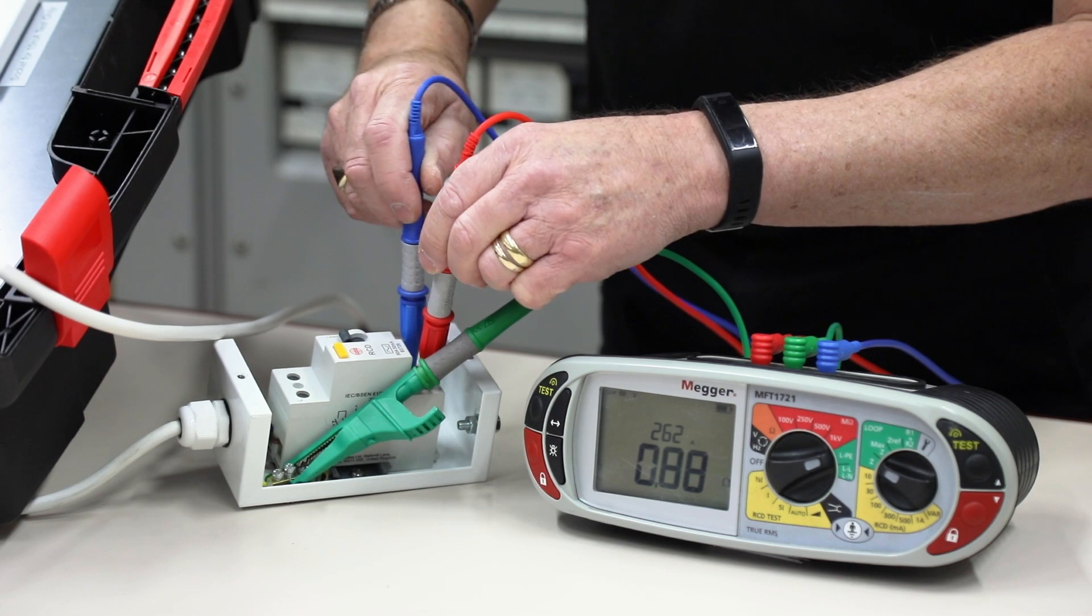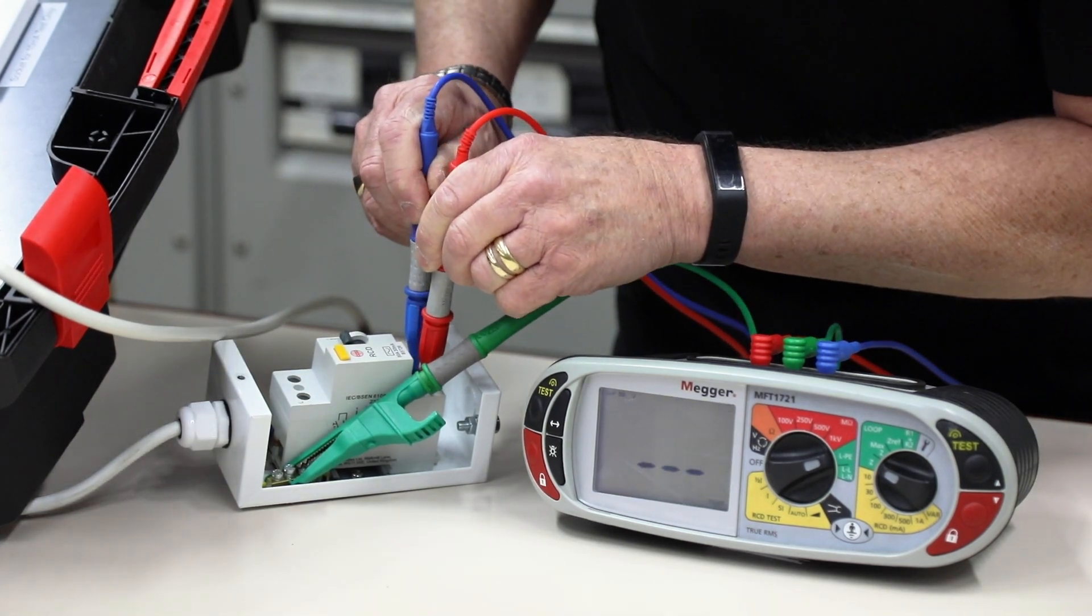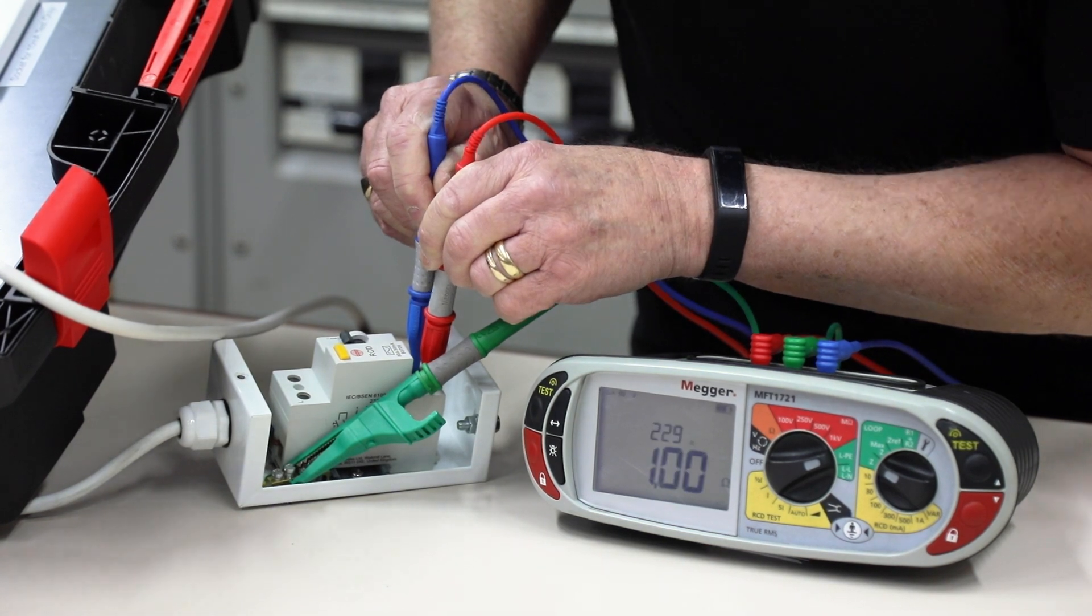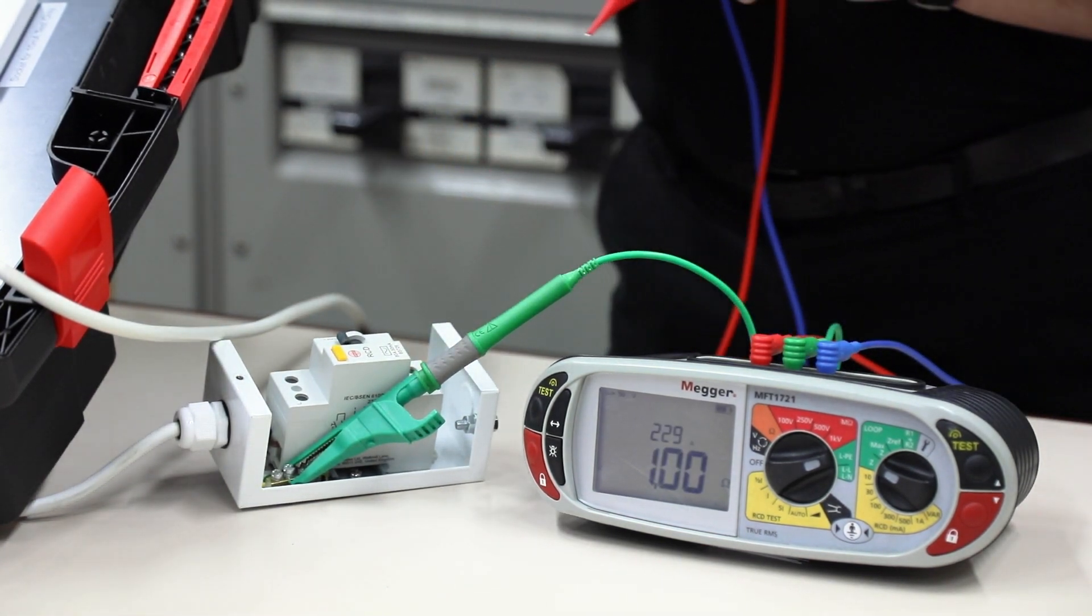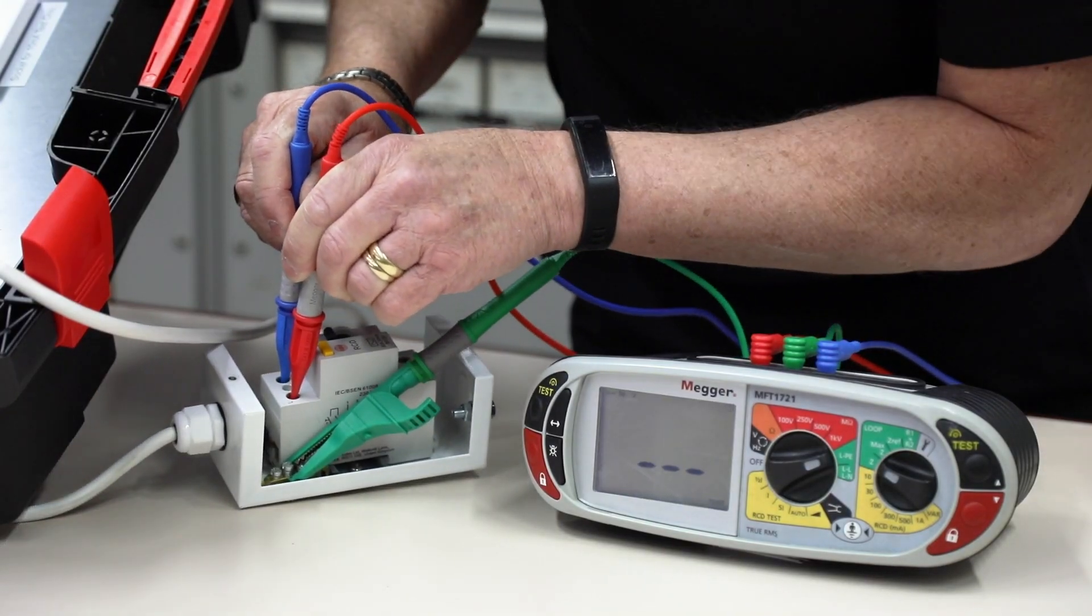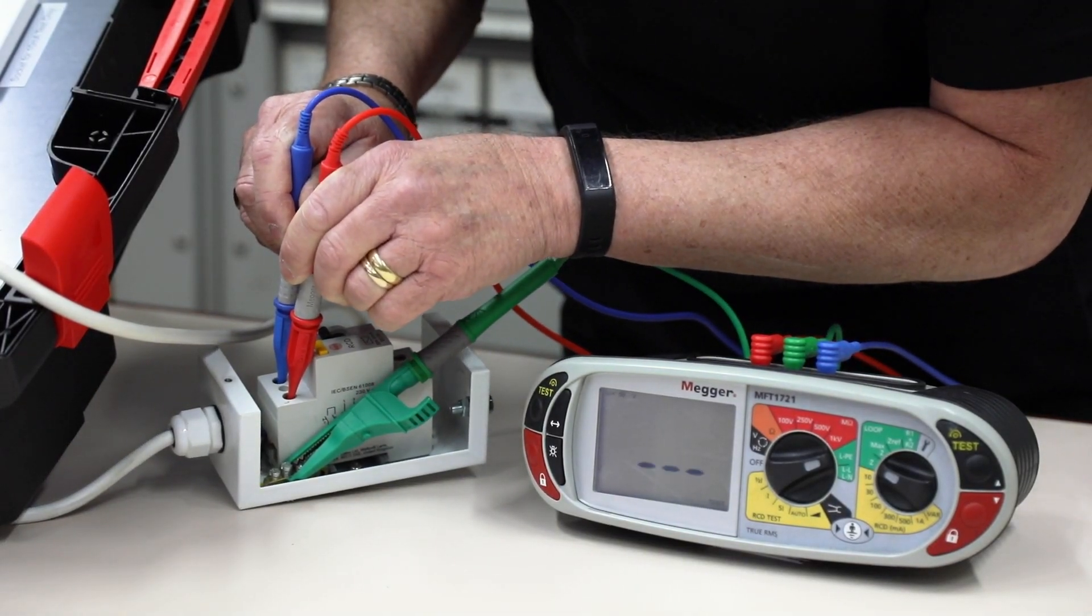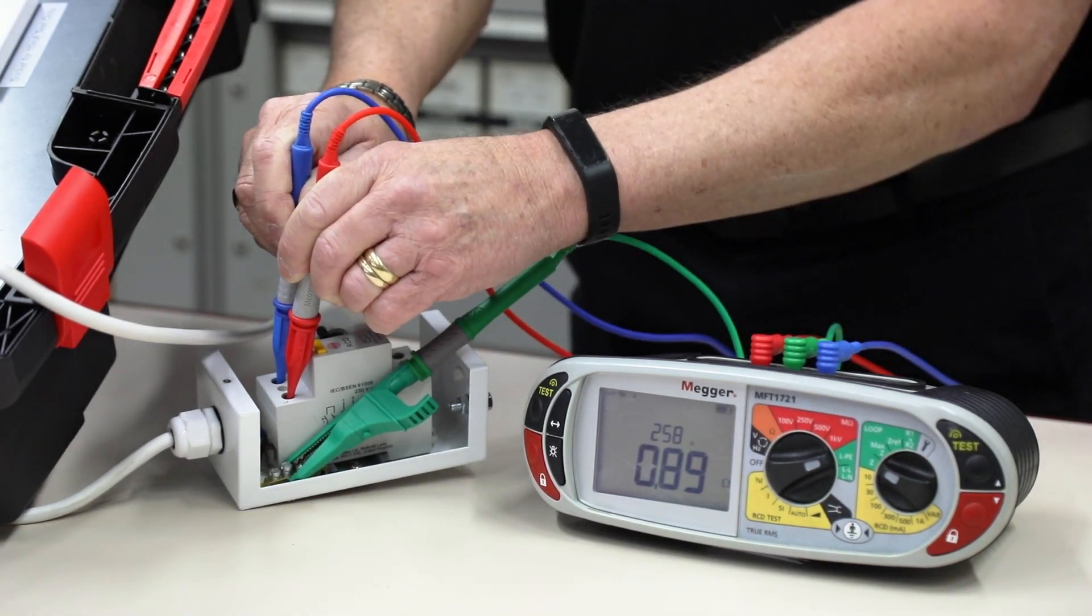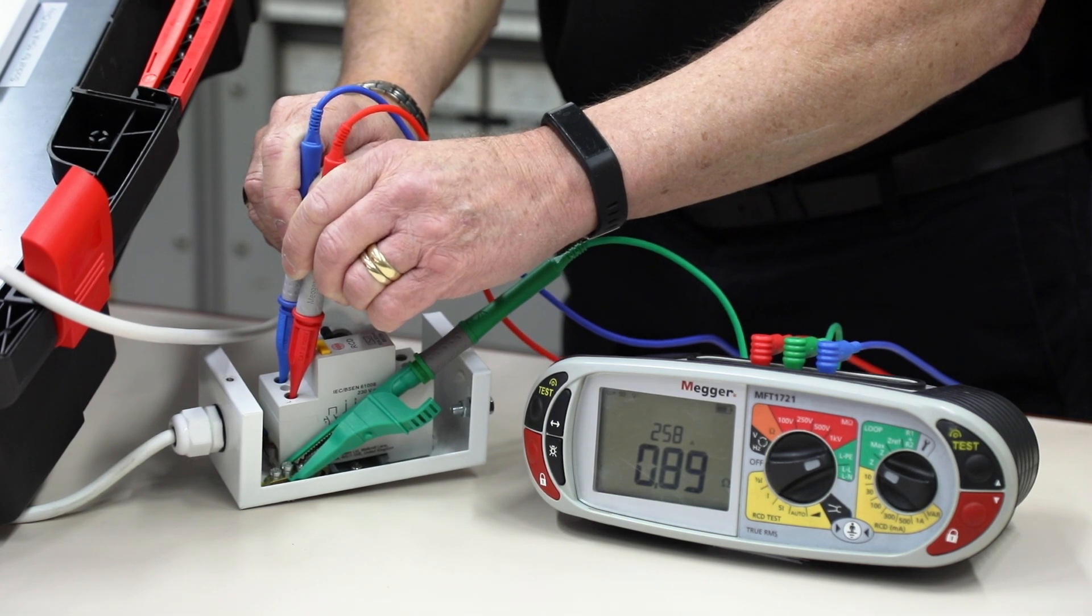So if we take a reading at the bottom, we achieve a value of 1 ohm. If I now do the same test at the top of the RCD, this shows a reading of 0.89 of an ohm, giving a 0.11 of an ohm differential.